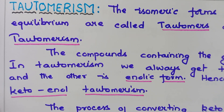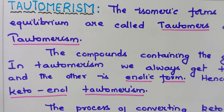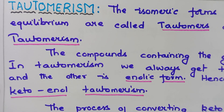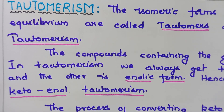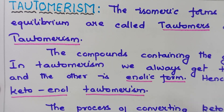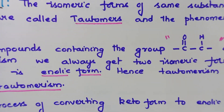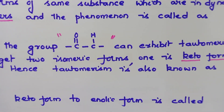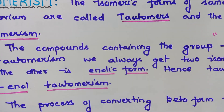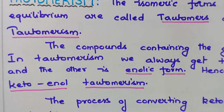Students, the notes I am showing can be written directly in your exam. There is another name for tautomerism: it is also known as keto-enol tautomerism, because the two forms involved are the keto form and the enolic form.